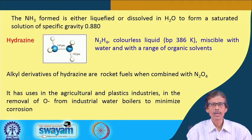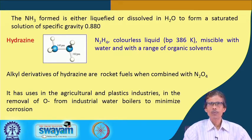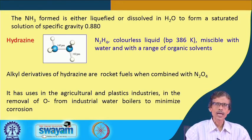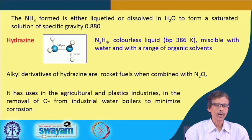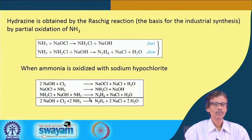Hydrazine is also used in the removal of oxygen from industrial water boilers to minimize corrosion. Water boilers should have a minimal amount of dissolved oxygen, because at high temperature that dissolved oxygen can attack the boiler material — whether steel or iron sheets, causing corrosion and formation of iron oxides. Hydrazine can take up that O₂ and remove it from the dissolved water in industrial water boilers.